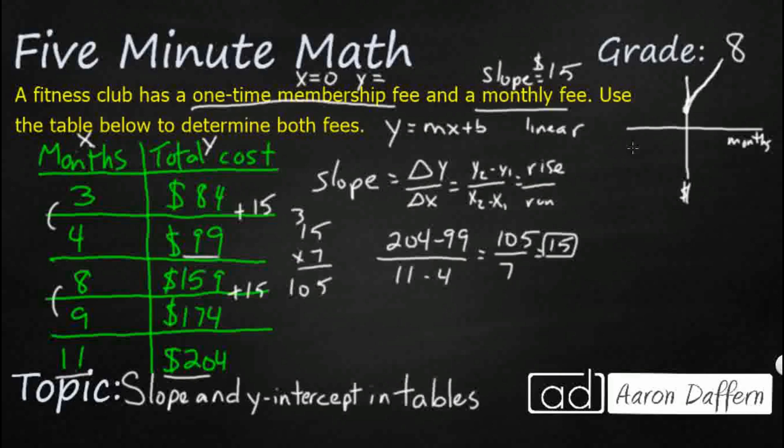How do we find our one-time membership fee? Well, let's just take this back. So if three months was 84, then two months, one month, zero. We could just take that slope and we can now subtract 15. So 84 minus 15.